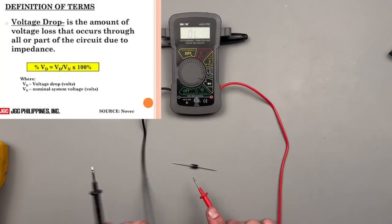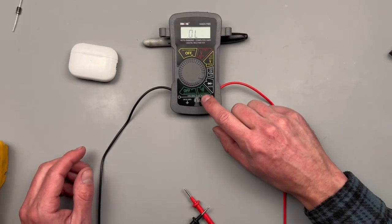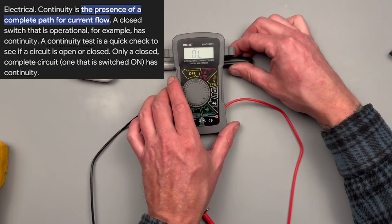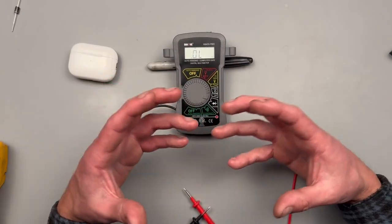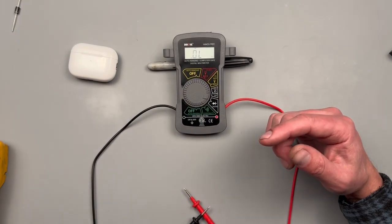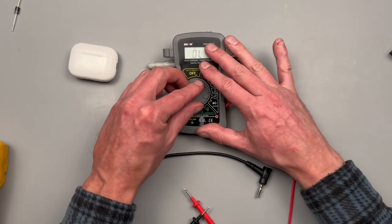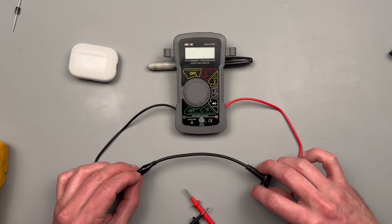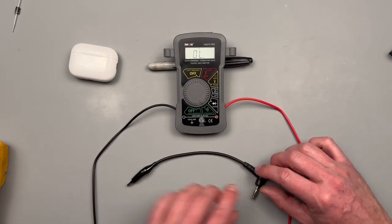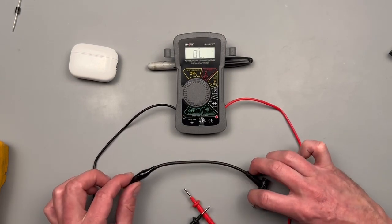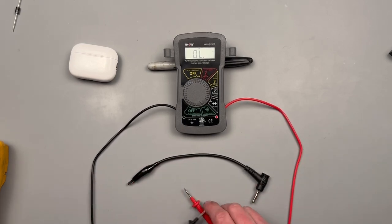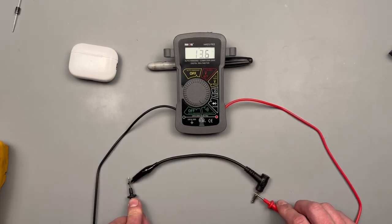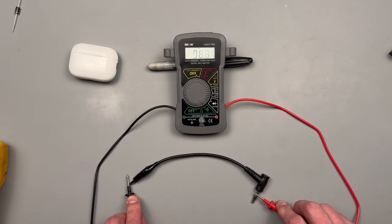Next setting is continuity. You'll see a little speaker, and that means the meter should produce a tone if a wire is intact. That's what this test is for. It doesn't mean the wire is in perfect condition or that there's no corrosion. It just means electron flow is possible through the wire, so we should hear a tone.